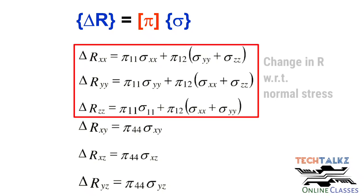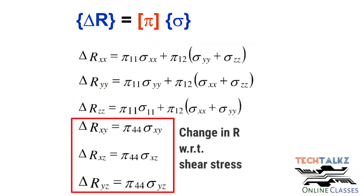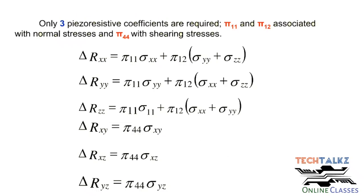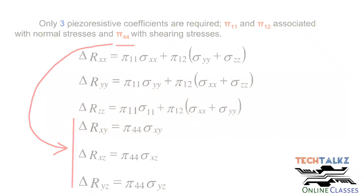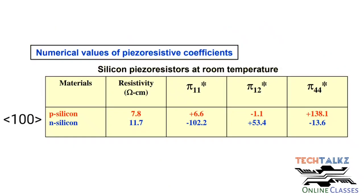There are 6 expressions total: 3 relate normal stress components to change in resistance, and the remaining 3 relate shear stress components to change in resistance. Pi11 and Pi12 are associated with normal stress components, and Pi44 is related to shear stress components. We can verify these values in the table for 100-orientation p-type and n-type silicon.